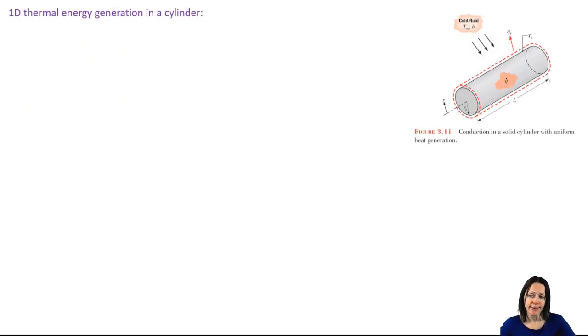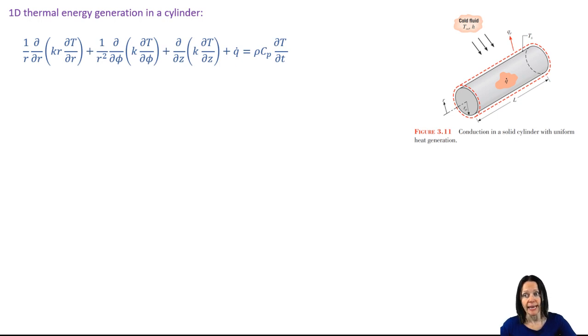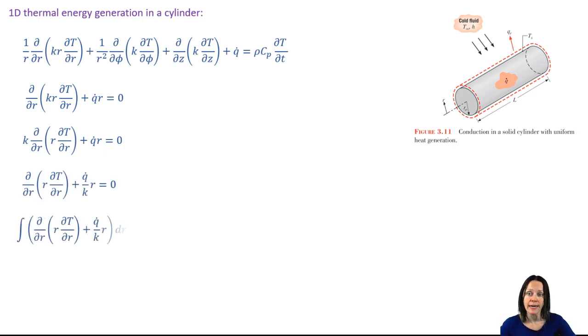Now let's take the case of a cylinder. So say that cylinder is long enough so that we can ignore the temperature variations at the end. And that way we can approximate it as one dimensional. The thermal conductivity is constant. We could divide through by the thermal conductivity. And then we multiply each side by dr and integrate.